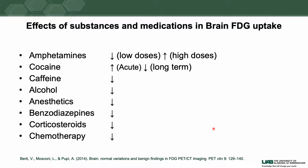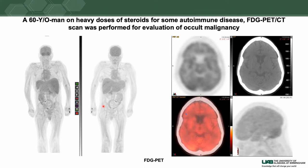Various substances and medications affect brain FDG uptake. Amphetamines have a variable effect: at low dose they decrease metabolism, whereas at high dose they increase it. Cocaine works the other way: a low dose or single shot increases brain FDG uptake, whereas chronic cocaine use leads to decreased cerebral uptake. All other substances — caffeine, alcohol, anesthetics, benzodiazepines, corticosteroids, and various chemotherapies — decrease cerebral metabolism.